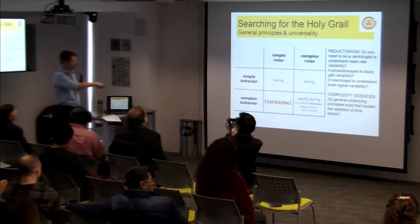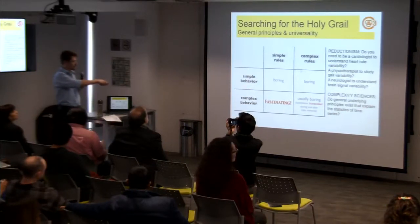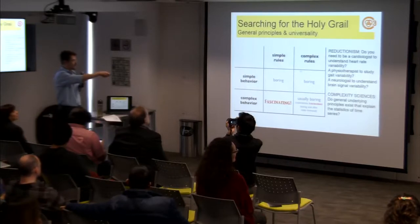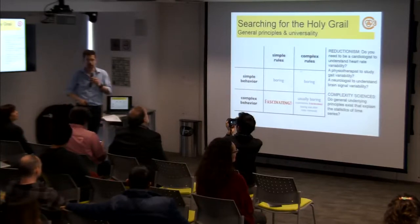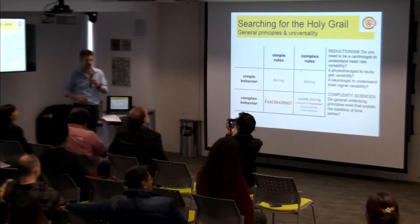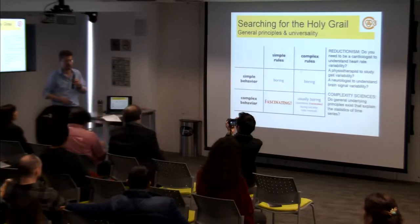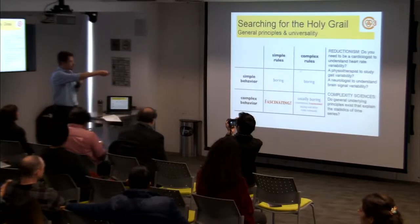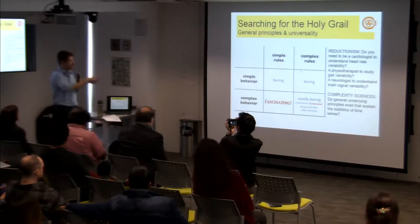Hopefully, this complex behavior of physiological time series can be explained with simple underlying rules which apply to all of these different variables — heart rate, blood pressure. That's my focus. I would be very interested to find these simple rules.